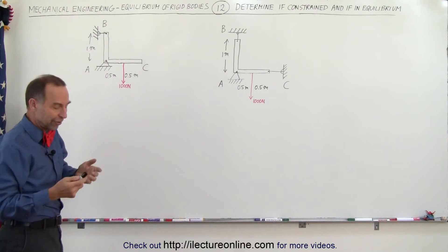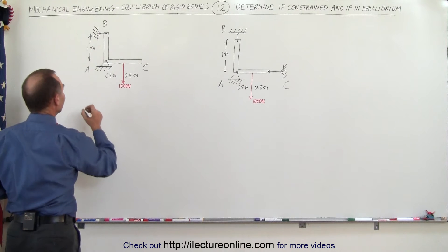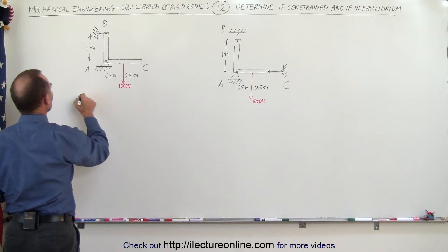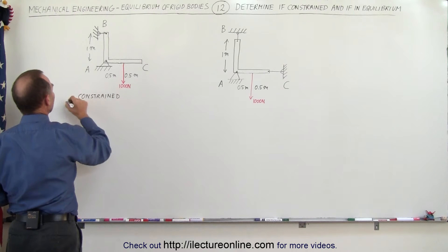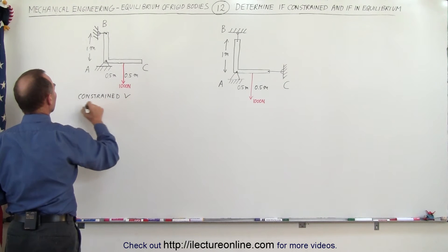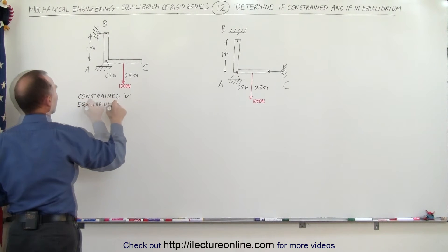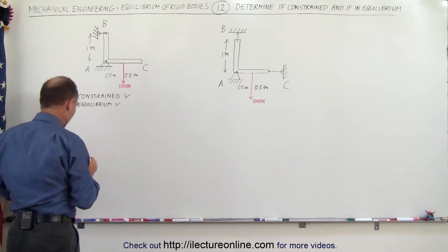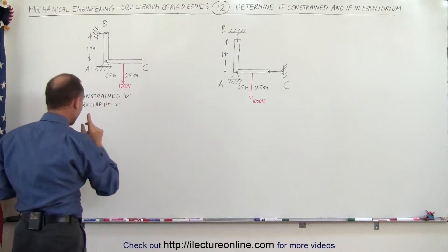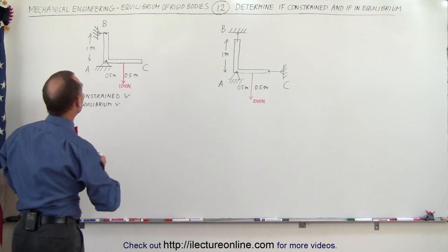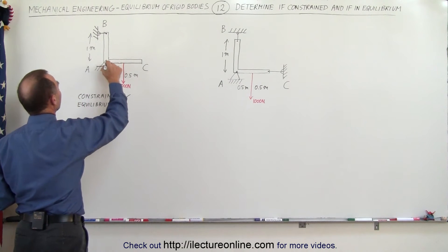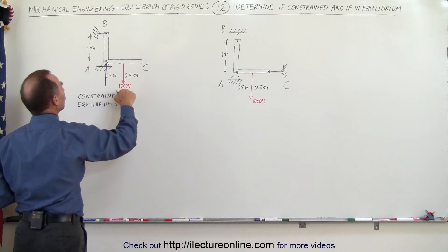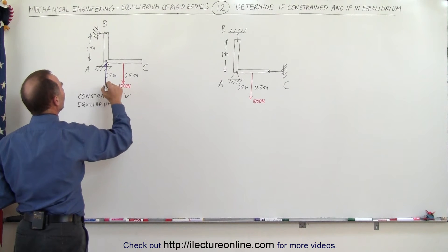We can say that it is properly constrained and it is in equilibrium. At A, we're going to experience two forces: one counteracting the thousand newton force — we call this F at A in the y direction.